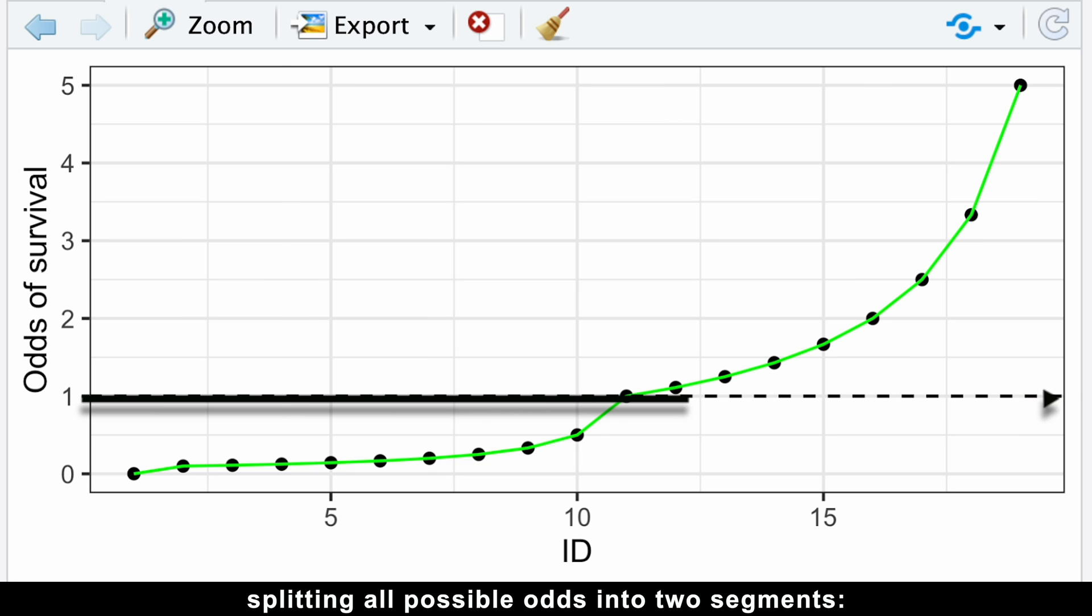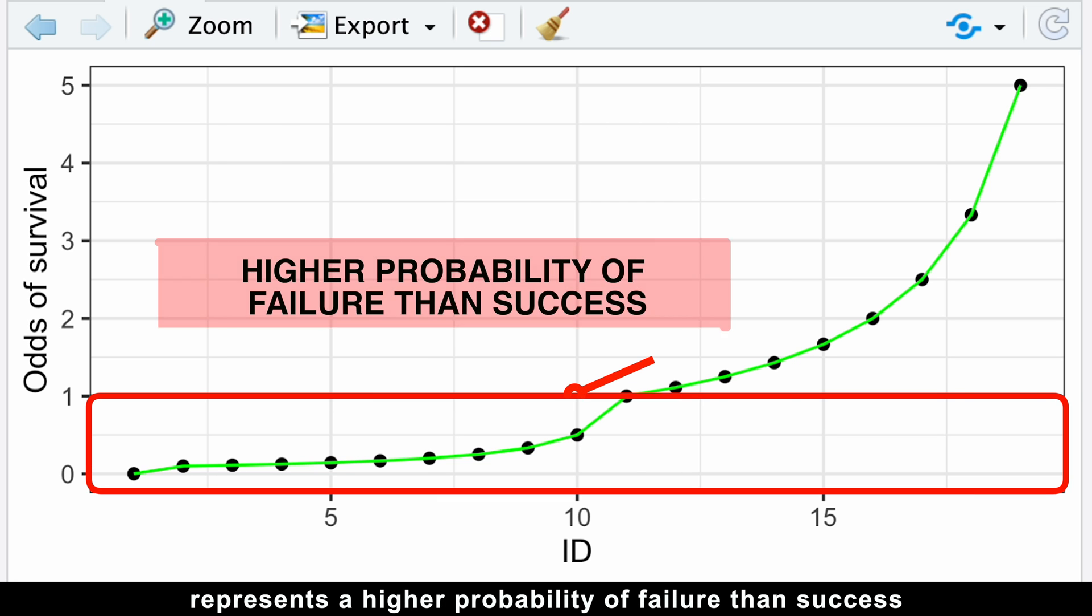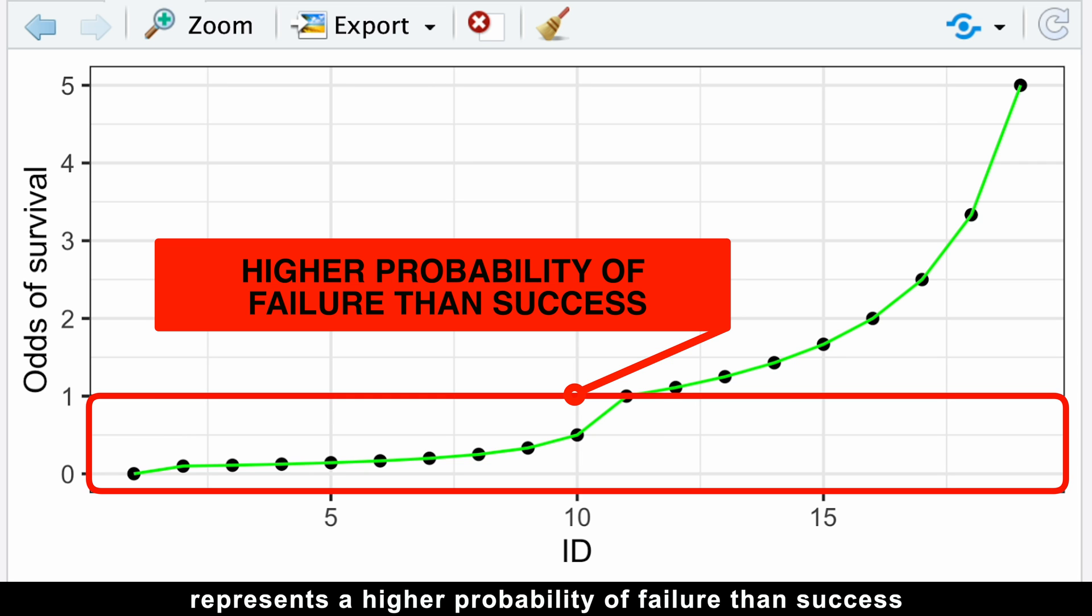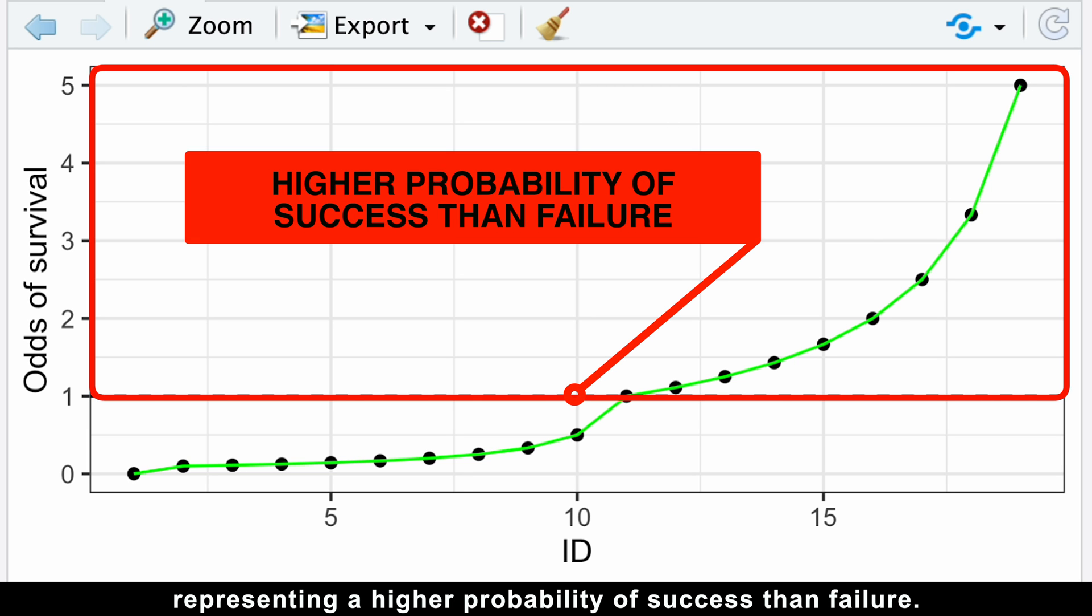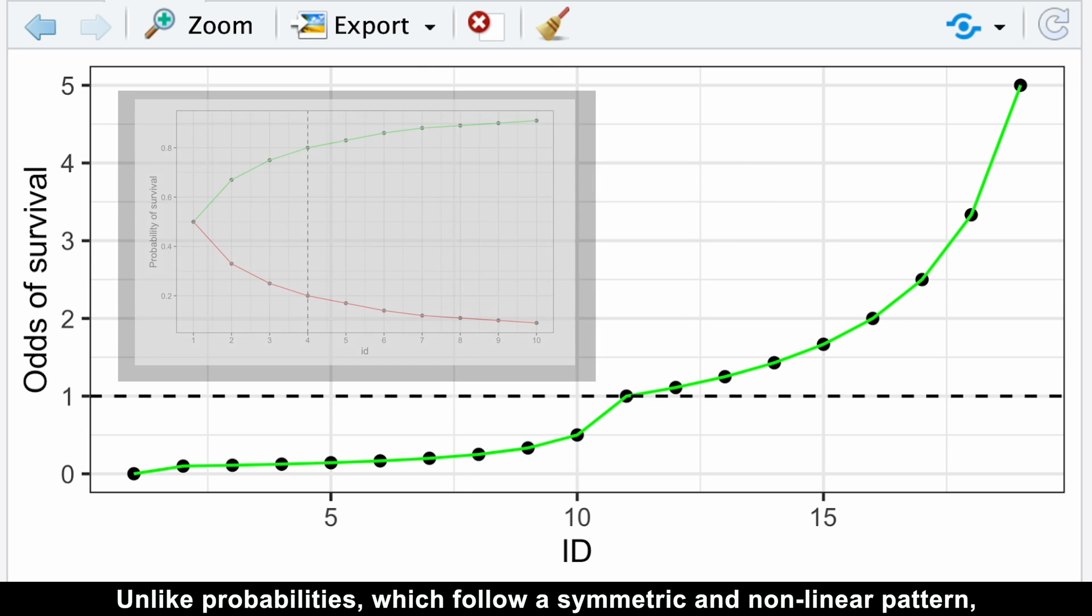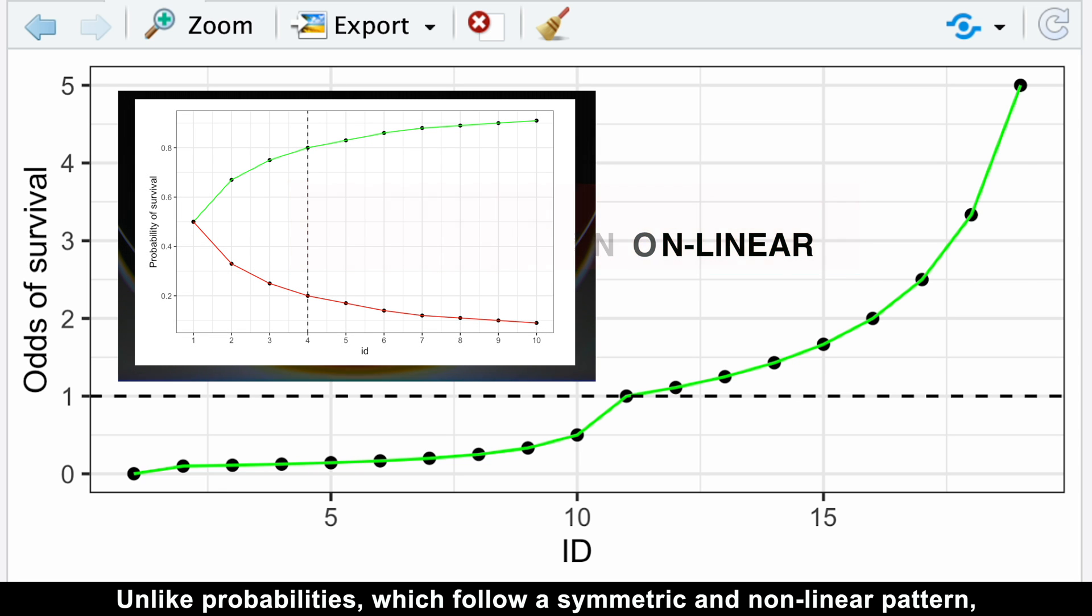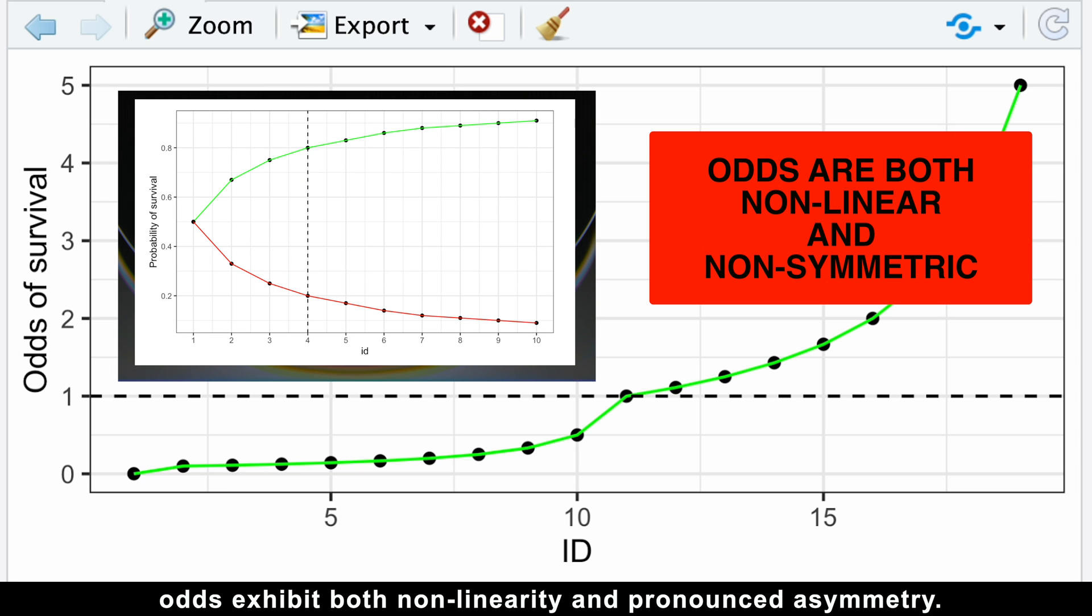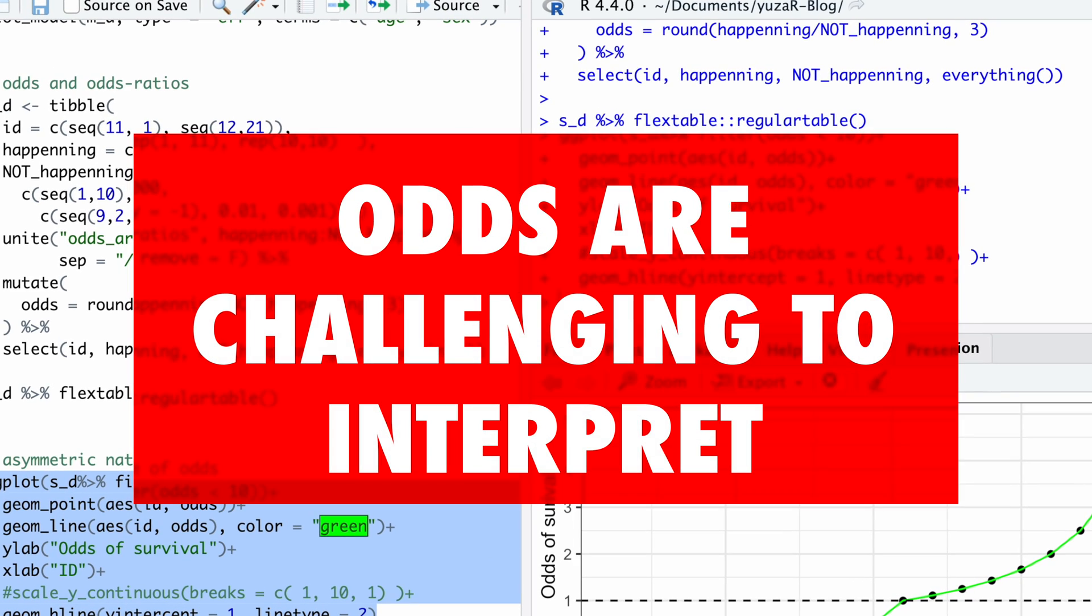The middle point acts like a divider, splitting all possible odds into two segments. A small segment from zero to one represents a higher probability of failure than success, and a literally infinite segment from one to infinity represents a higher probability of success than failure. Unlike probabilities, which follow a symmetric and non-linear pattern, odds exhibit both non-linearity and pronounced asymmetry.